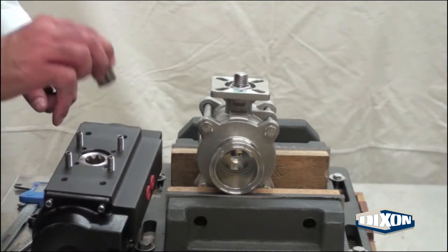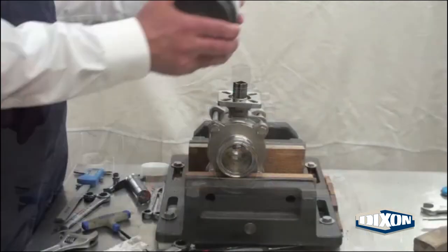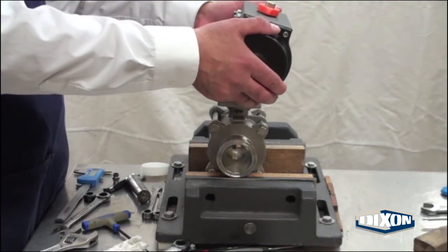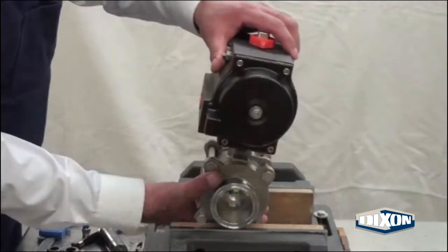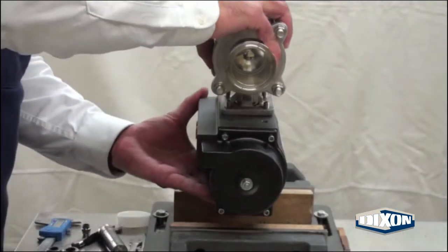The sleeve could also be mounted to the valve stem prior to installation. Place the actuator on top of the valve pad. Flip the valve assembly in the vise.